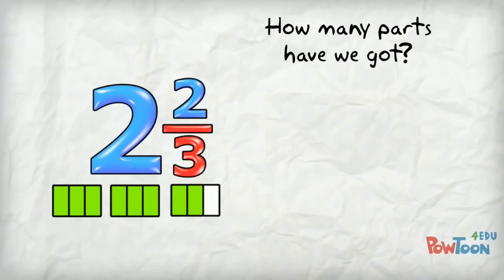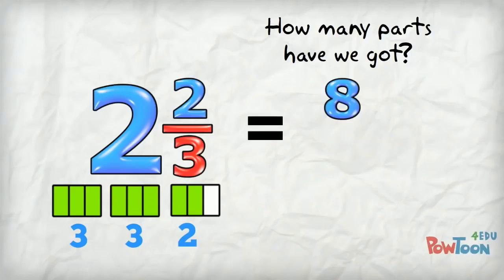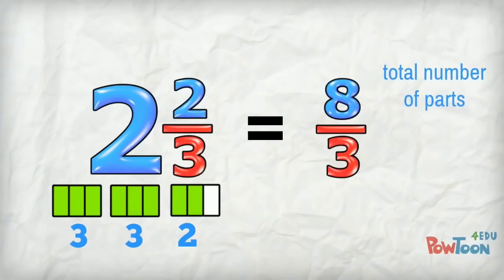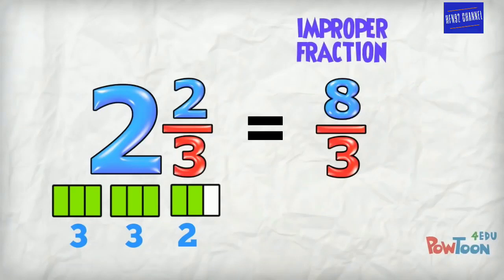How many parts have we got? There are two holes, so that's two lots of three, six, plus two more parts. That's eight. And we keep the same denominator because this is still parts out of three. So we put the total number of parts, that's eight, over our denominator of three. And there's your improper fraction.